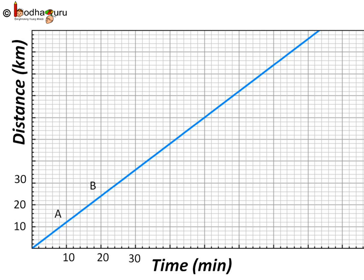So a graph of uniform speed is a straight line. To get distance for any time, we just need to look at the graph and find out the value.